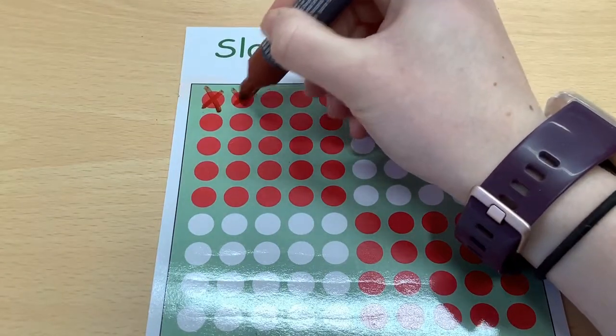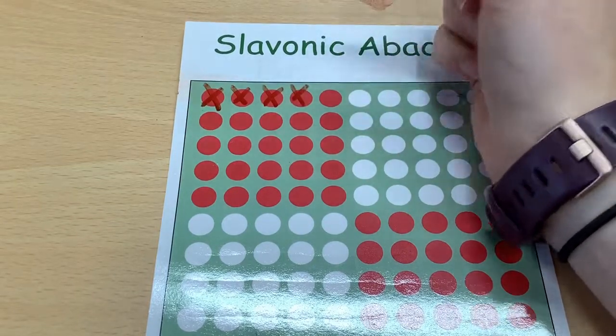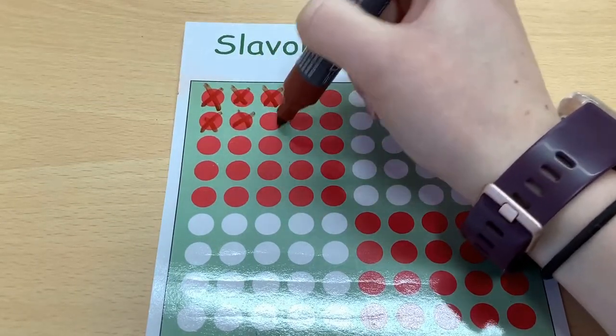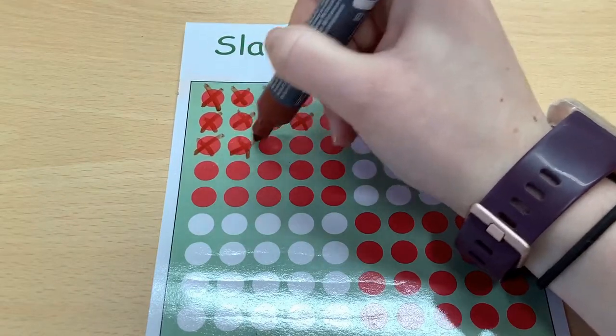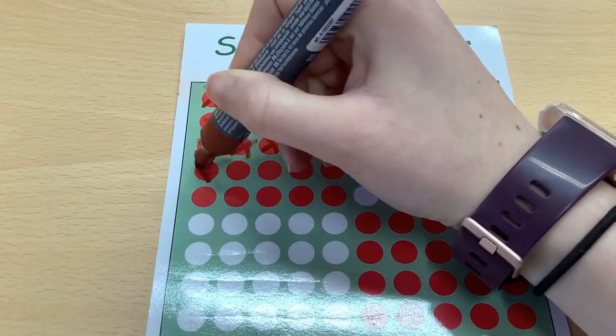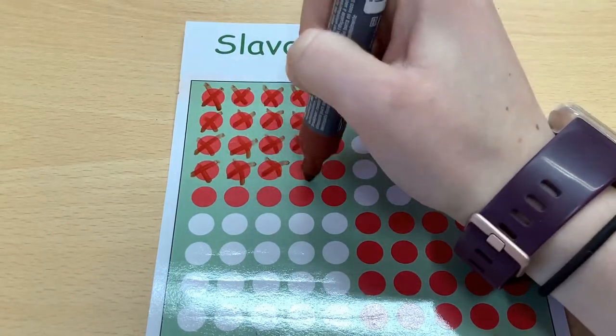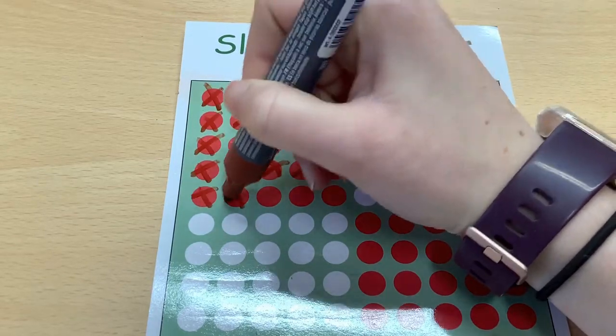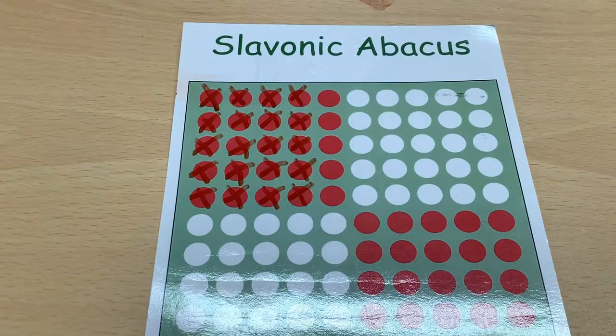So 4 multiplied by 5 means that you have got 4 five times. So 1, 2, 3, 4, 5 times. That's 2 times, 3 times, 4 times, 5 times.